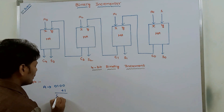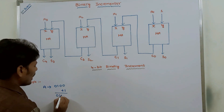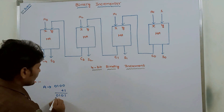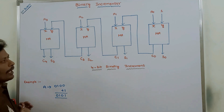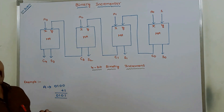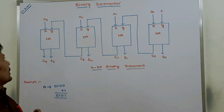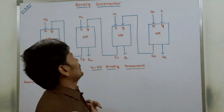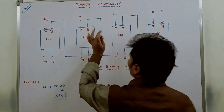We have to add one at the LSB of the given binary number. Then we get 0101 as the result of the binary incrementer.